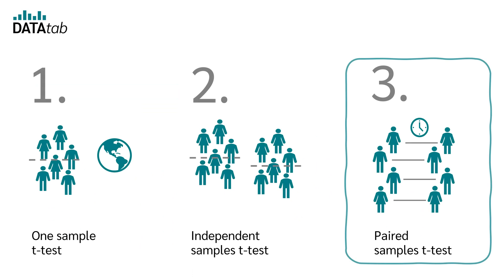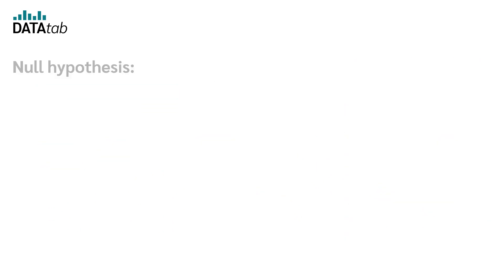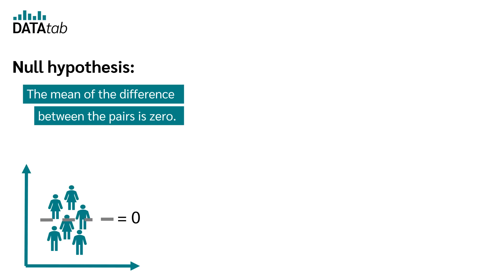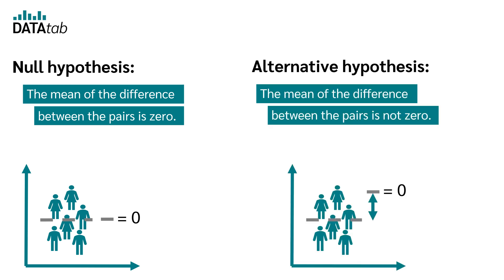Finally, the paired samples t-test. In the paired t-test, the null hypothesis is that the mean of the difference between the pairs is zero. The alternative hypothesis is that the mean of the difference between the pairs is not zero.